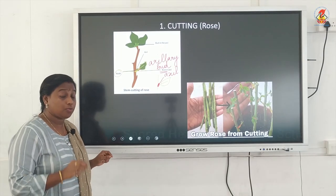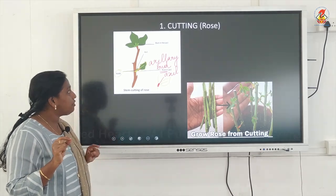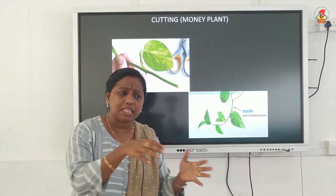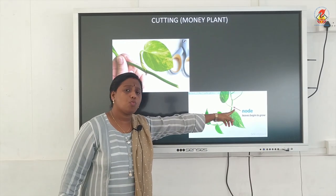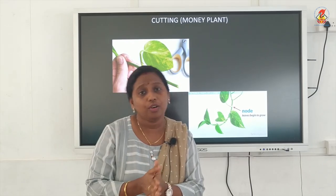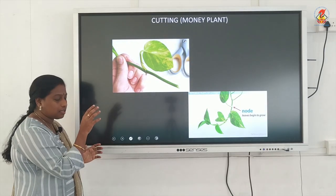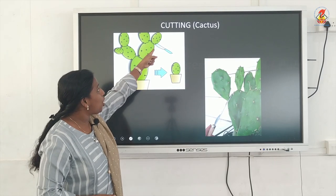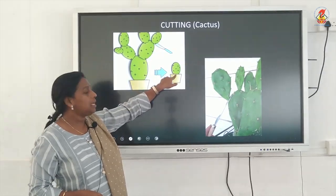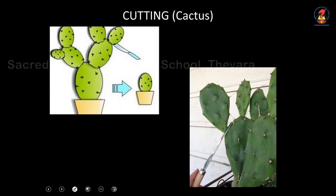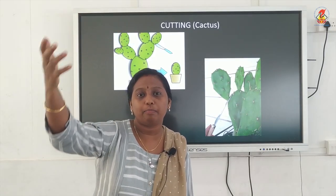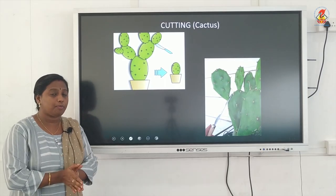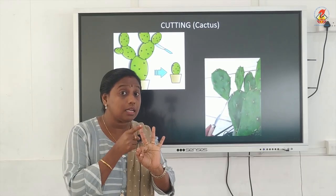This is how you propagate a plant by the vegetative propagation method called cutting. Another example is money plant — it can also be propagated by cutting. You can take small cuttings of stem and grow them either in soil or in water. At least one node should be present on the cutting. Cactus plants can also be propagated by cutting — a small piece can be removed with a knife and kept in soil, where it will develop roots beneath and more branches on top.